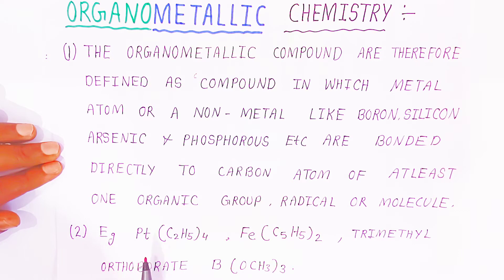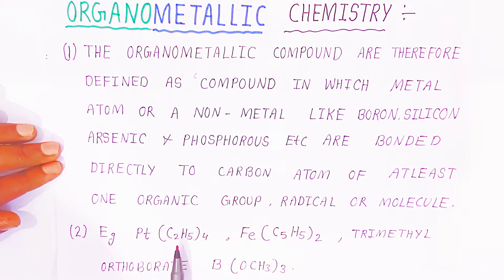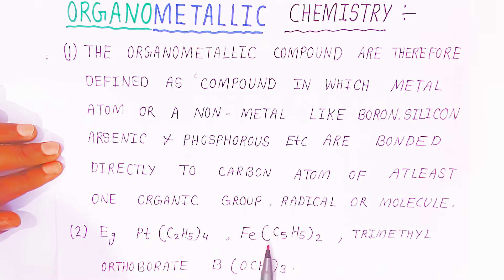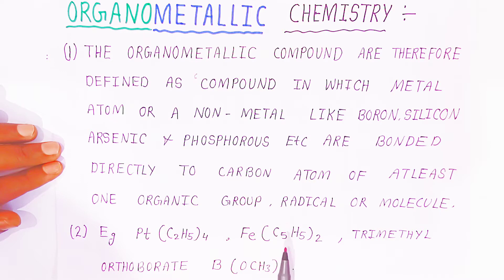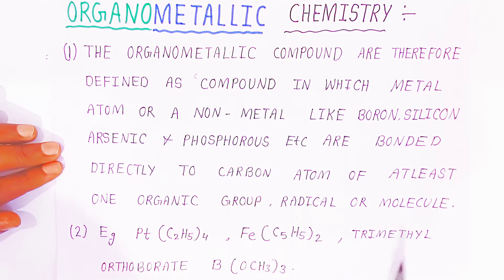The first example is tetraethyl platinum — platinum is the metal and ethyl is the organic component, which is why it is called an organometallic compound. In ferrocene, the organic moiety is bonded to iron, which is the metal, forming a well-known organometallic compound. We have also seen trimethyl orthoboride as another example.